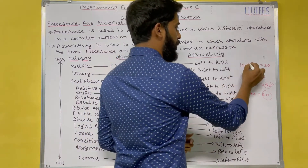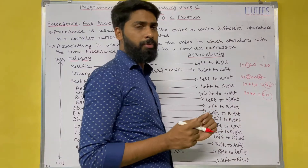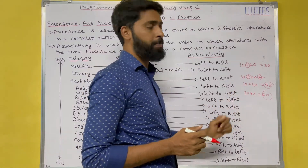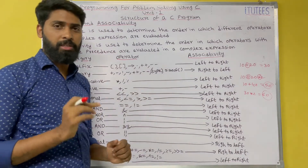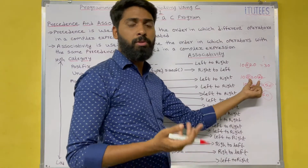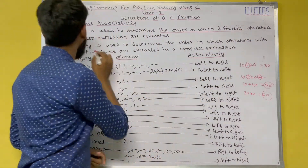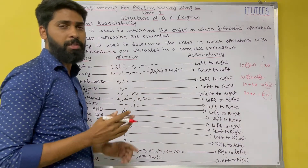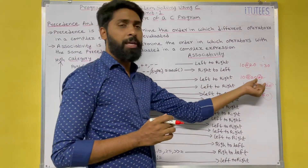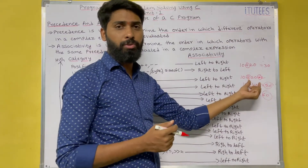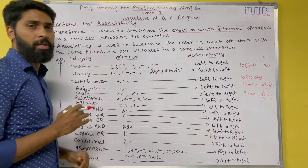In a simple expression we have only one operator, but in a complex expression we have more than one operator. If we have more than one operator in an expression, how do we solve this? For that we need precedence and associativity. Precedence is used to determine the order in which different operators in a complex expression are evaluated. So for 10 plus 20 into 2, we follow the precedence rule.